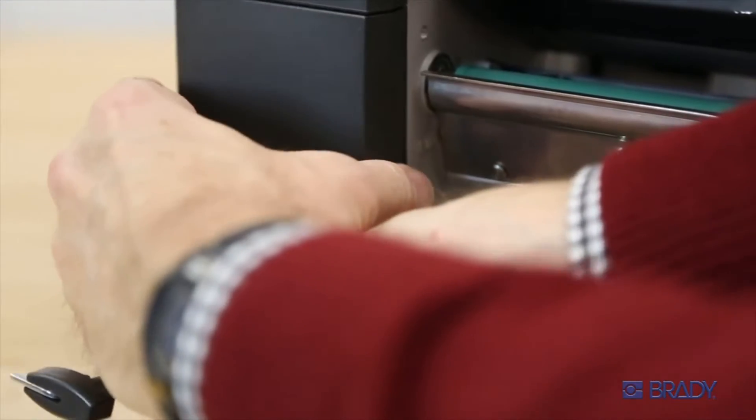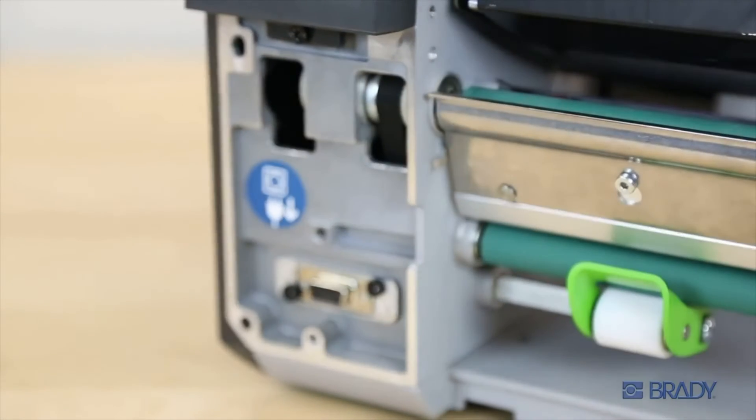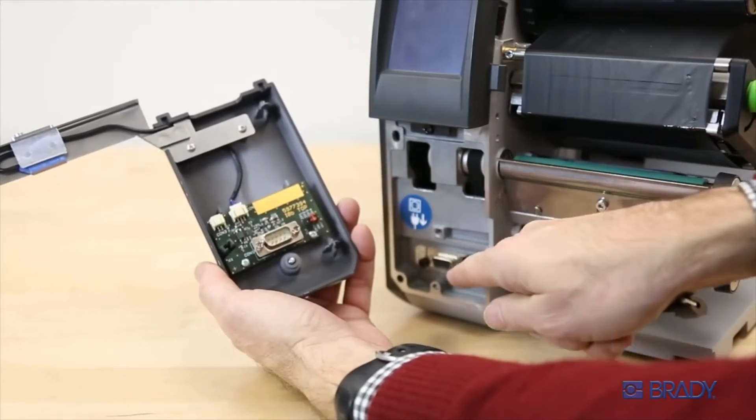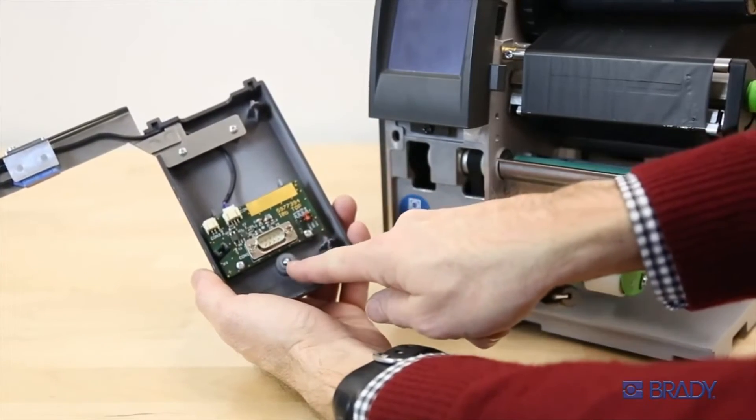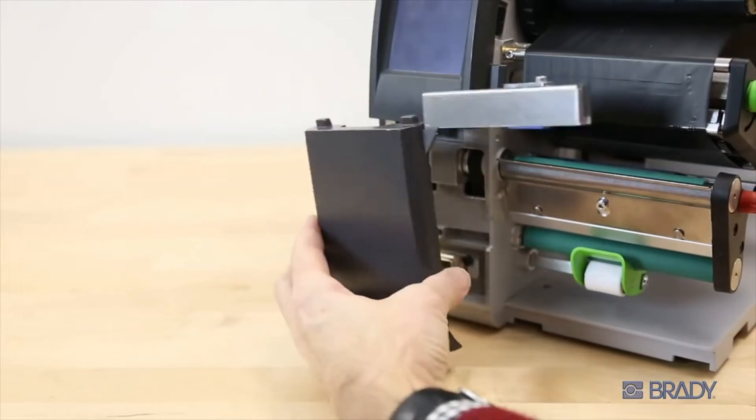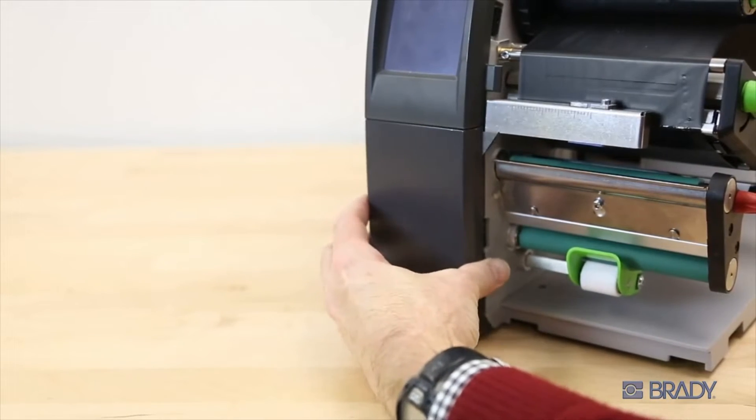Then unscrew the front plate and remove it. Be sure to line up the port and screw on the sensor and screw it back into place. Now you can turn the printer back on.